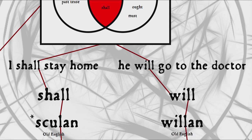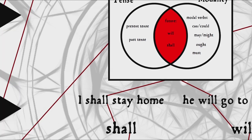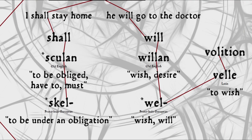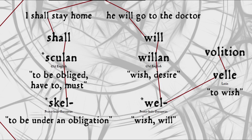So can we call these constructions future tenses? Well, maybe, but there's a lot of disagreement on this point. First of all, the future tense isn't grammatically required to express the future — we can simply use the present tense forms. Furthermore, if we look at the etymology of the auxiliaries used to form future constructions in English, it appears that they may carry other meanings in addition to future time reference.